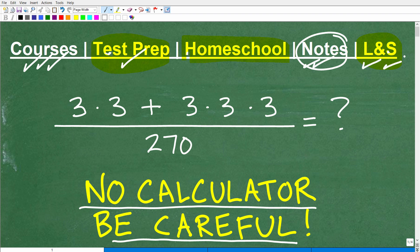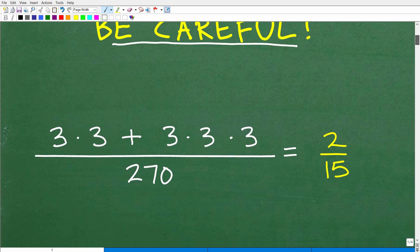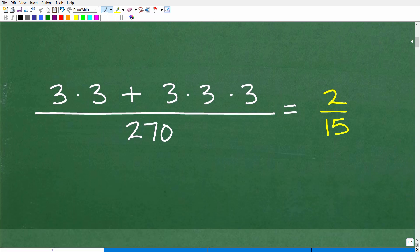Okay, so I'm going to show you the answer here. And then, of course, I'm going to go ahead and do this problem in my own way. Again, your work could look a little bit different. But here it is. So we have 3 times 3 plus 3 times 3 times 3 all over 270. 2 over 15, 2 fifteenths is the right answer.